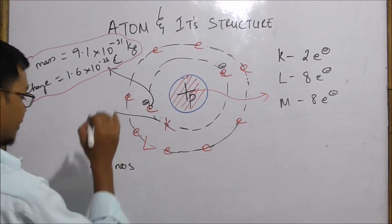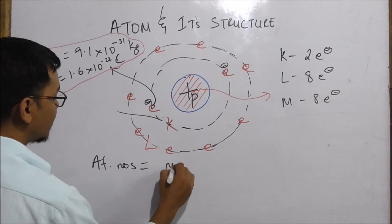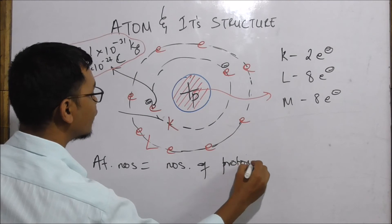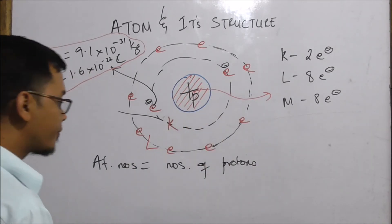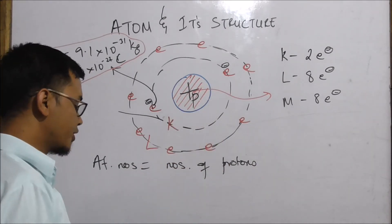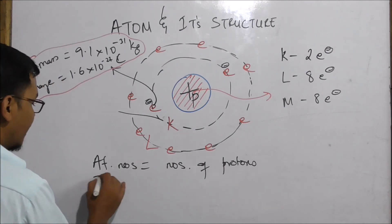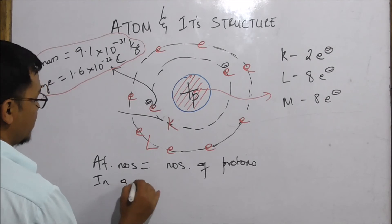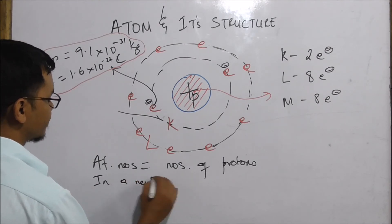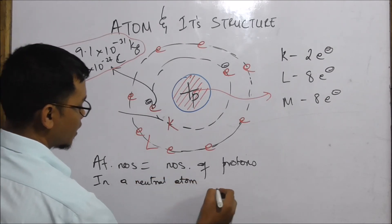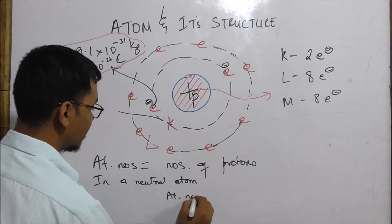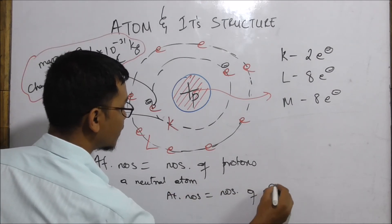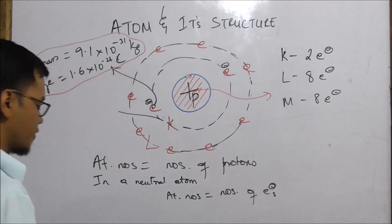The atomic number is basically the number of protons — the number of positive charges. In a neutral atom, the atomic number is also equal to the number of electrons.